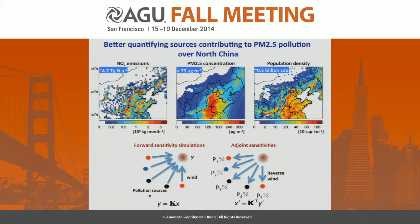It is great that this presentation follows Professor Yuxuan Wang's talk. Now we have a great picture of what we are facing, what problem we are facing. This area, North China, centered with the capital city Beijing, has high air pollutant emissions leading to severe air pollution, especially in winter. And also this region is highly populated, so it is important and necessary to better quantify the sources of air pollution.